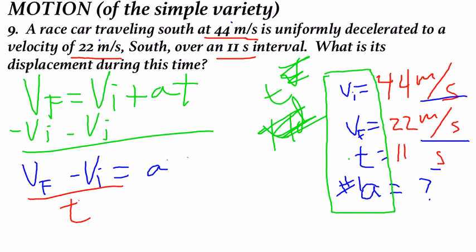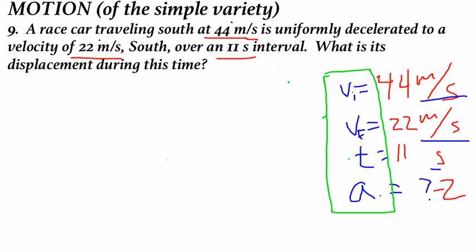Plug and chug, and you get an acceleration of negative 2. You slow down, so you have an acceleration of negative 2.